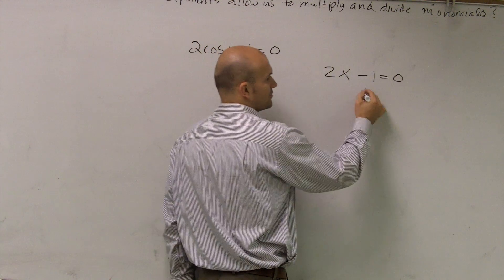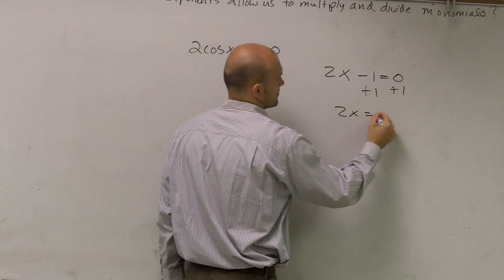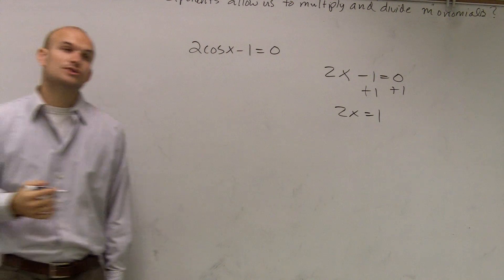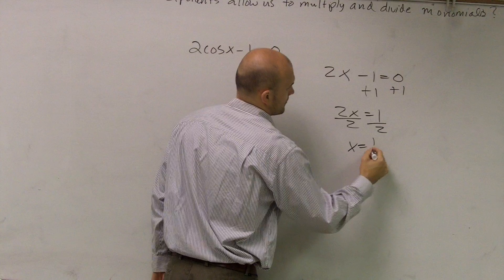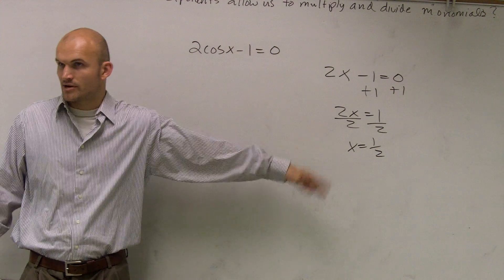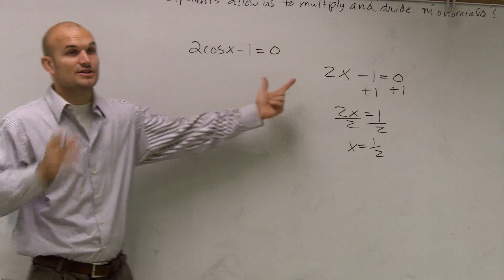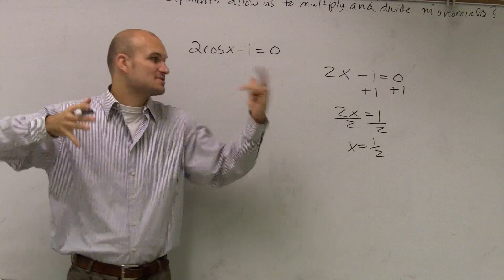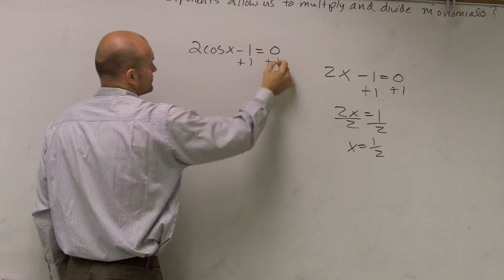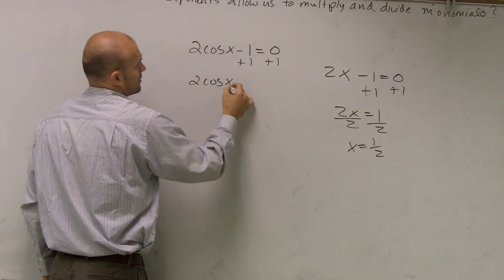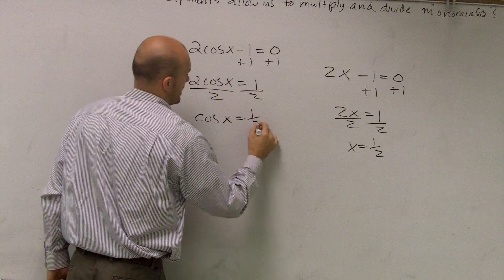To solve this, the first thing we always do is undo addition and subtraction, then we always undo division and multiplication. For here, it's the exact same thing, except now rather than just x, it's cosine of x. So I'll add 1, divide by 2, and now I get cosine of x equals 1 half.